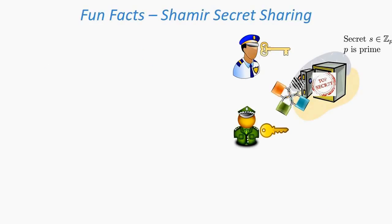The idea is as follows. I have a secret s, and let the secret s be an element of ℤ_p when p is prime. Now what I do is I pick a random element in ℤ_p, call it s₁, and I give it to the first person.